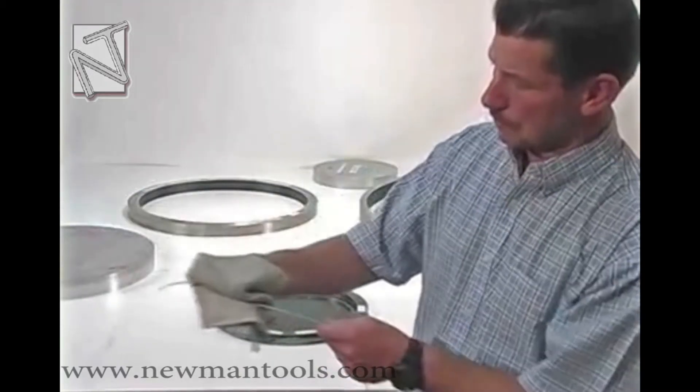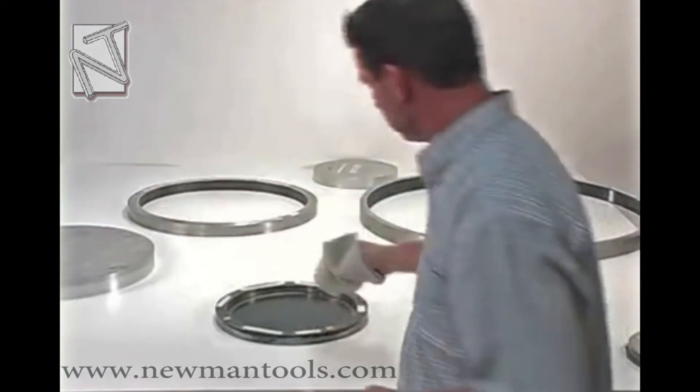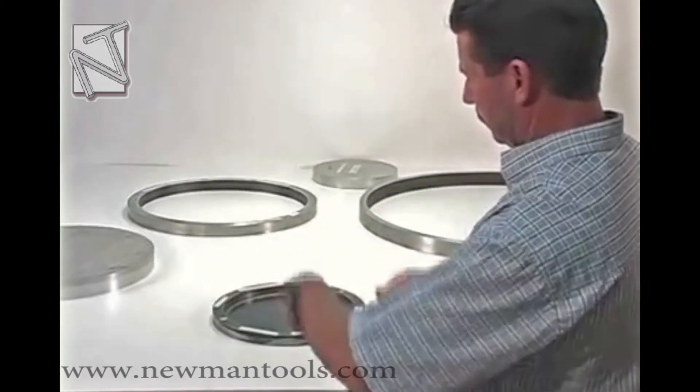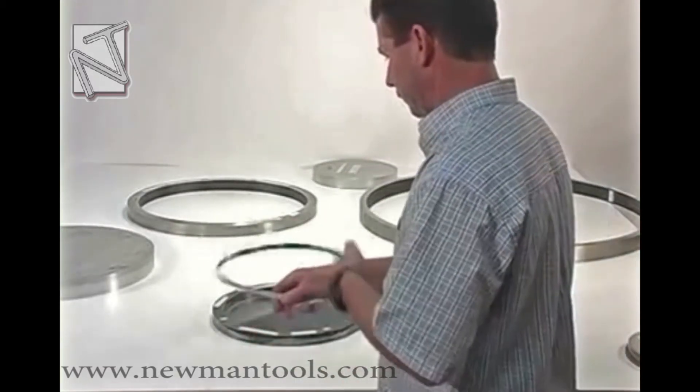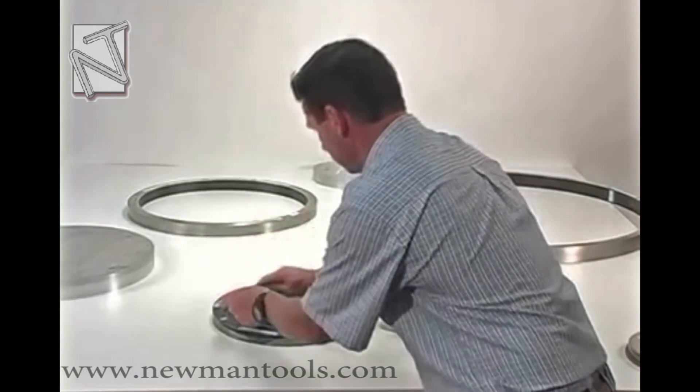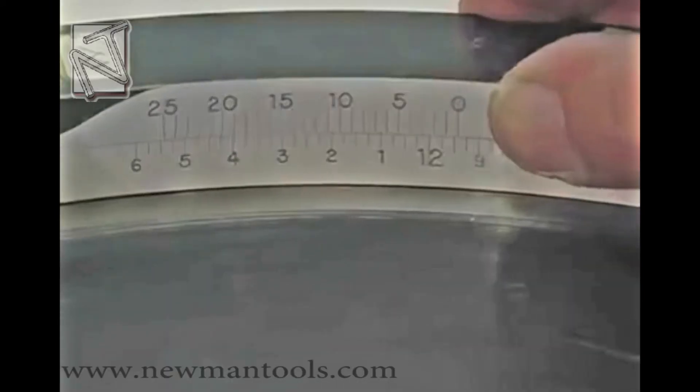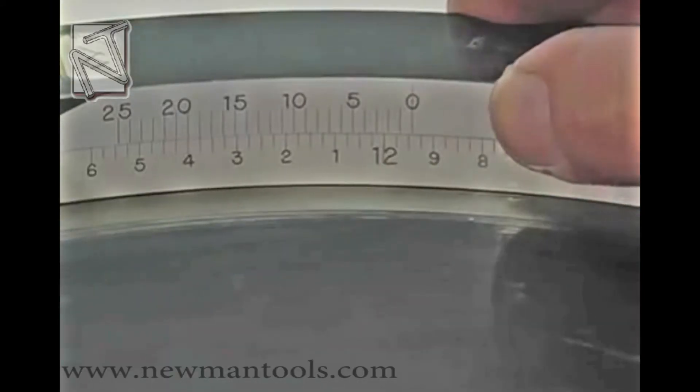Make certain the tape is free of damage and the tape and the object to be measured are both clean. Wrap the tape inside the object to be measured. Slide the tape back and forth so the tape is wrapped evenly inside the part to be measured.